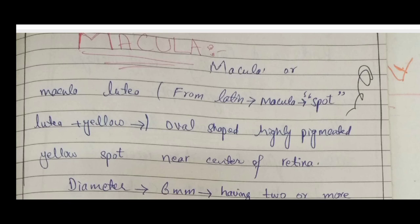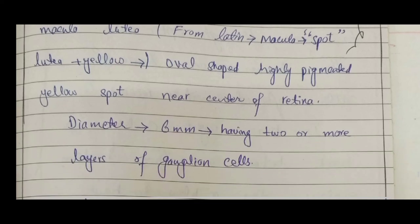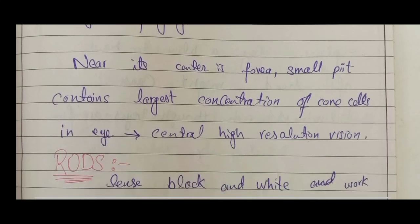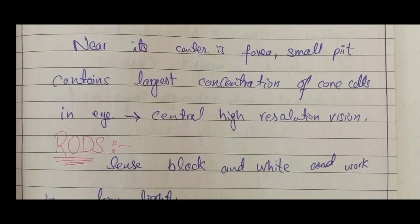The macula, or macula lutea, is a Latin word meaning 'spot.' It is an oval-shaped yellow pigmented spot present near the center of the retina, with a diameter of about 6 mm. It has two or more layers of ganglion cells. Near the center of the macula is the fovea — a small pit or depression that contains the largest concentration of cone cells.